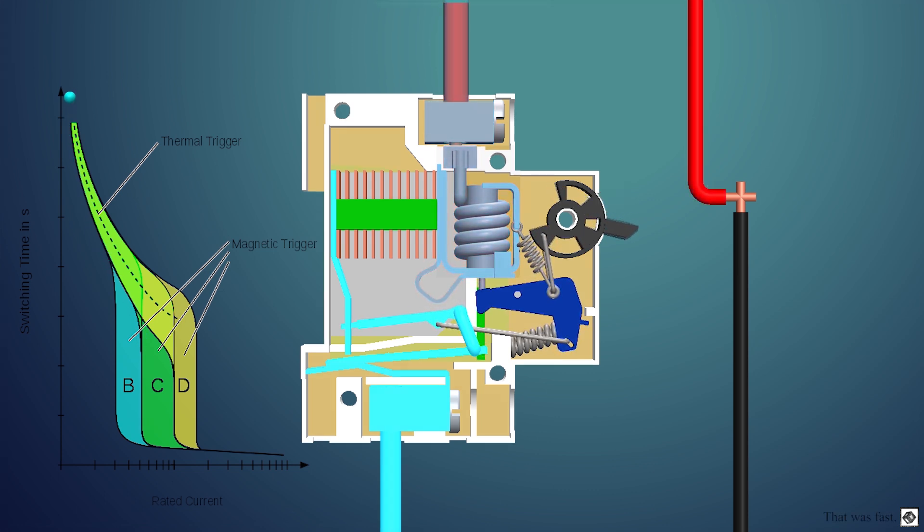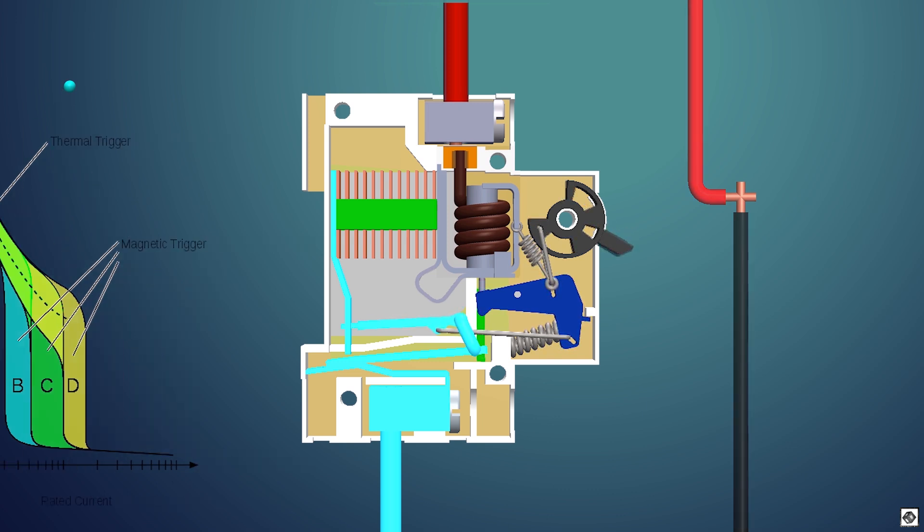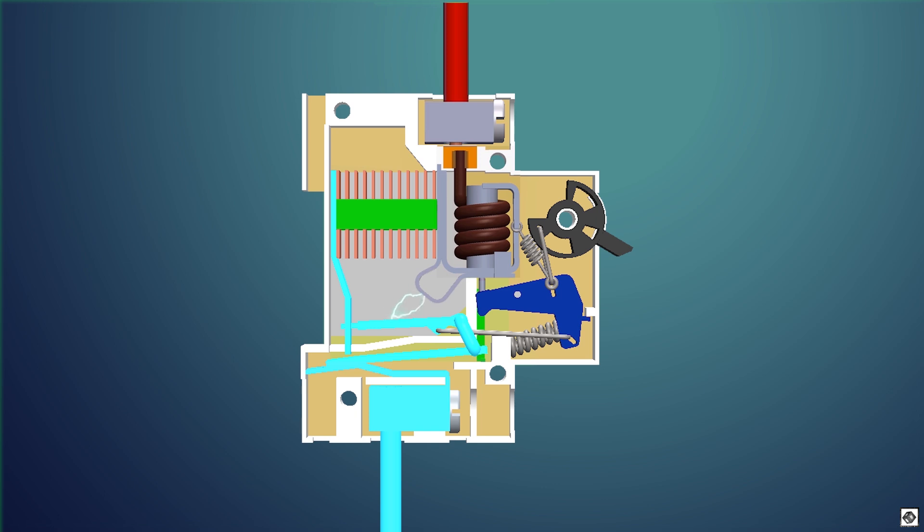The pin moves the mechanism, separating the contacts. Thus the MCB trips, and the flow of current stops. A spark is also generated and is dissipated by the spark divider.